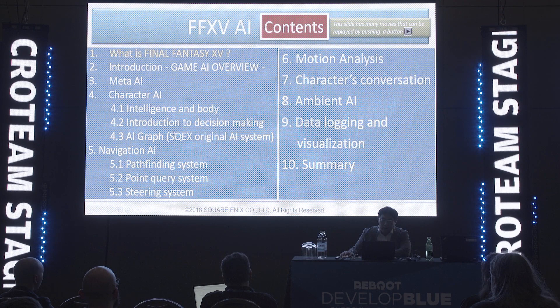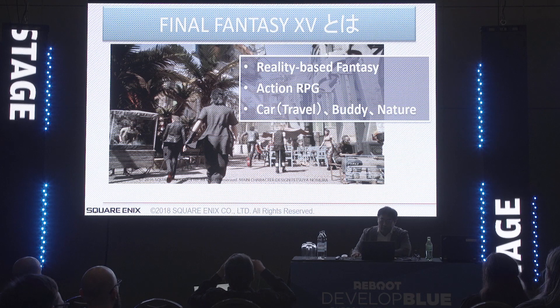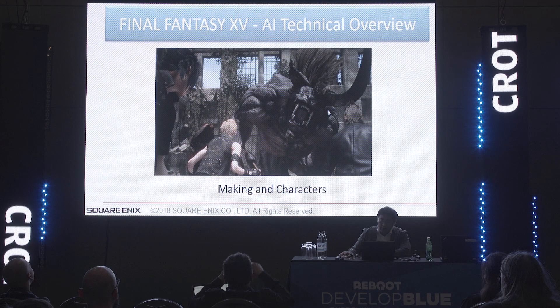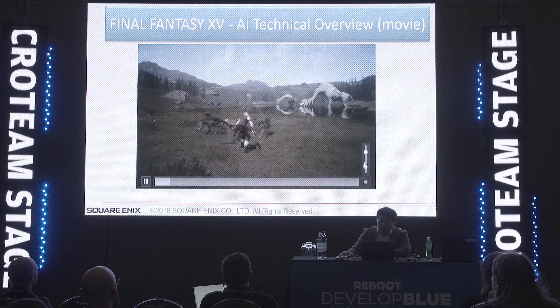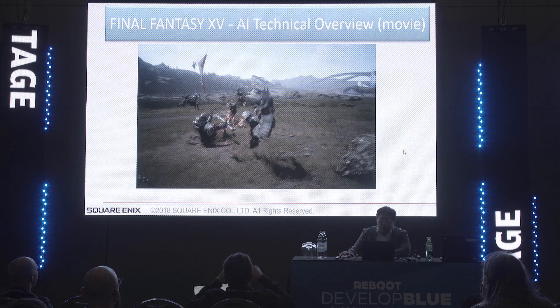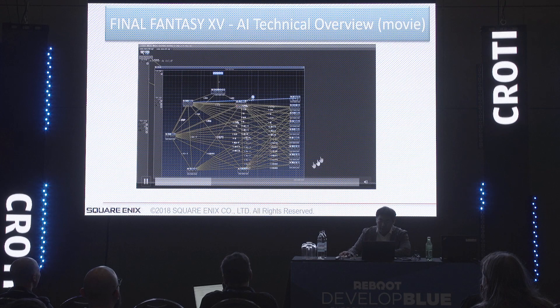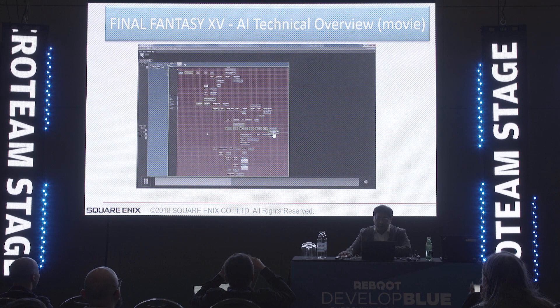Next is Final Fantasy XV. Final Fantasy XV is a very reality-based fantasy action RPG. Many characters move around in wild fields in complex natural environments, opposing monsters. I will show the demo of Final Fantasy XV. This is Noctis as the player. This is a single-player game. All characters, including party members and enemies, are AIs — autonomous AIs. They can sense the world, make decisions, and move their bodies by themselves. This is the AI graph, used to make the AI by game designers.